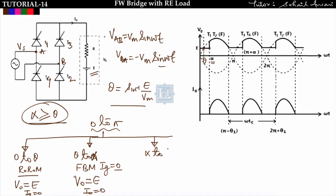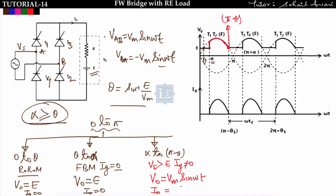From α to π−θ: supply voltage is greater than E and we trigger thyristors T1 and T2 (gate current ig ≠ 0). In this interval, output voltage follows the supply voltage: v₀ = Vm·sin(ωt). The load current is i₀ = (v₀ − E)/R = (Vm·sin(ωt) − E)/R. So we get load current i₀ from α to π−θ.